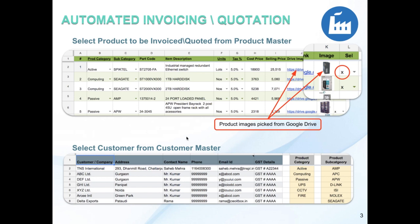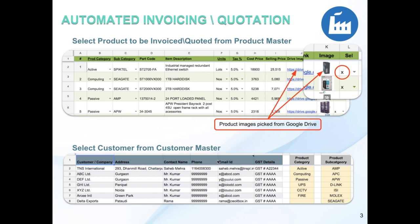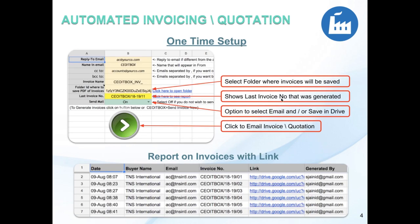Similarly, you can create a customer master which can later be used to simply select the name of the customer from a dropdown. You can also have dropdowns for product category and product subcategory, which pick automatically from the master — the subcategory is picked up from the product subcategory table.